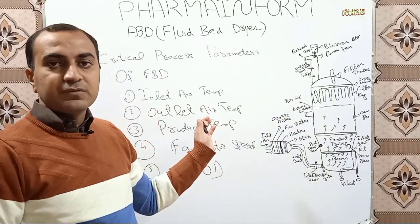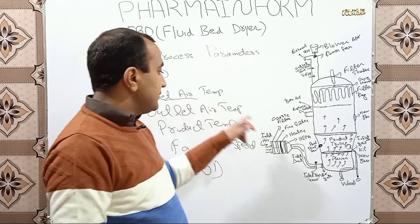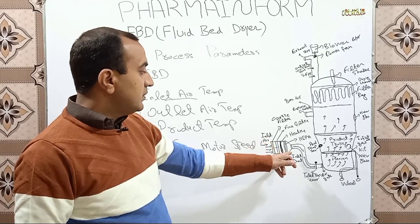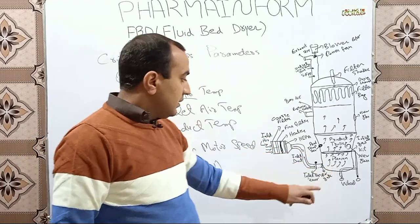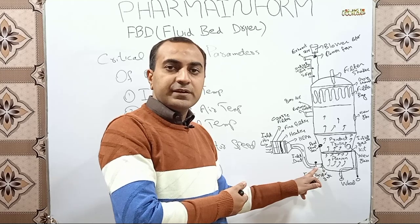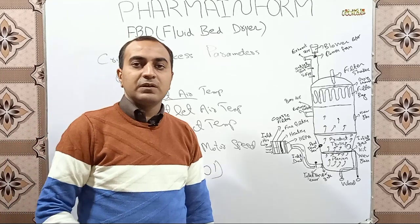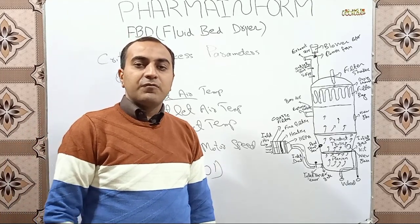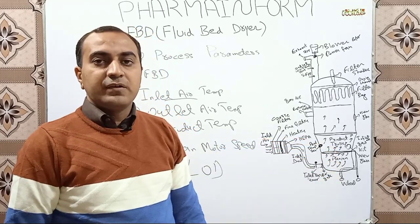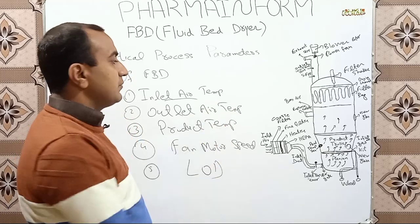What is inlet air temperature? Inlet air temperature is basically the temperature of air which is coming from outside through the inlet duct into the plenum. Here we have a sensor which monitors the temperature of the inlet air and displays it on the HMI. When we want to dry our product in the FBD, after adding the product into the FBD trolley and locking it into the drying chamber, we set a value for the drying temperature.